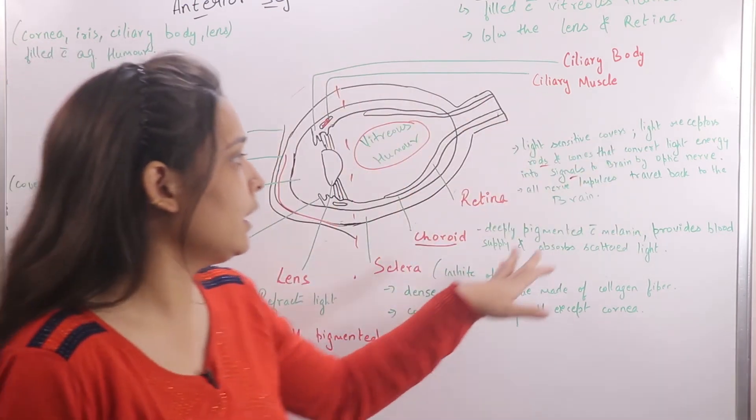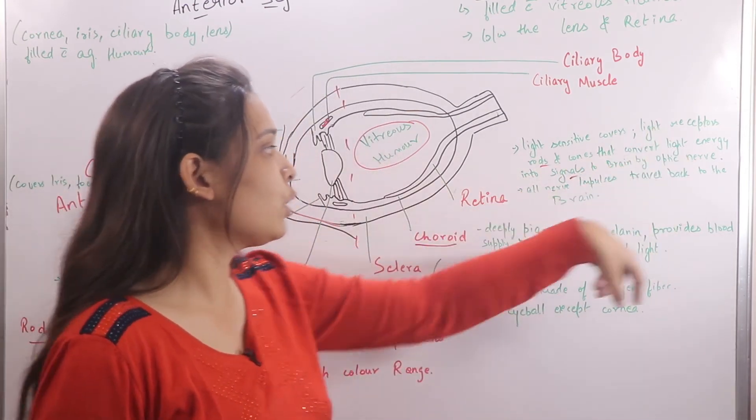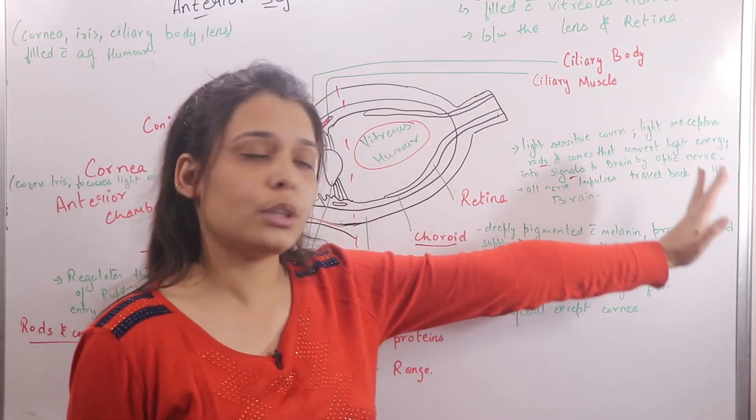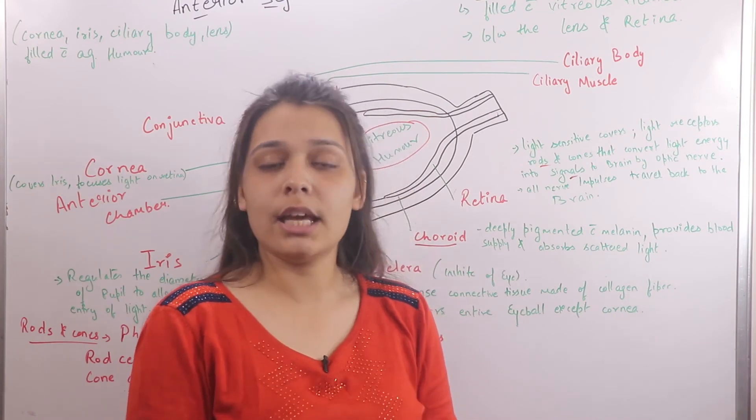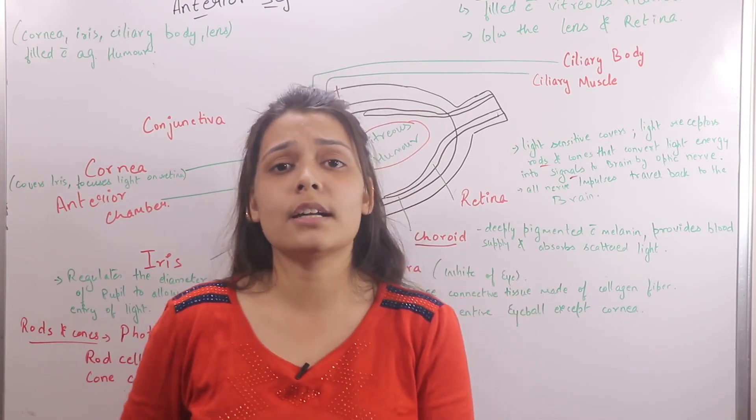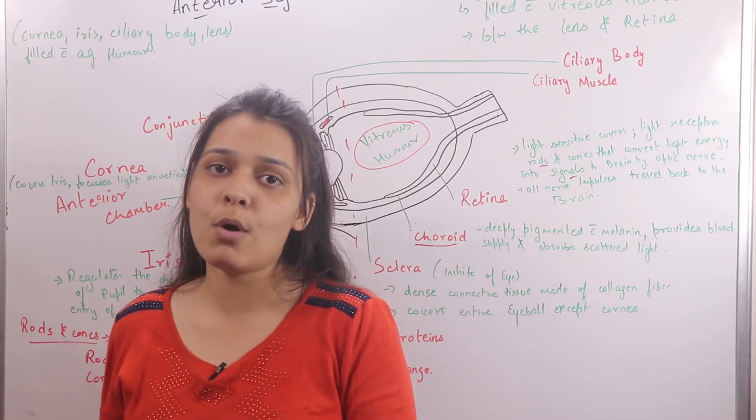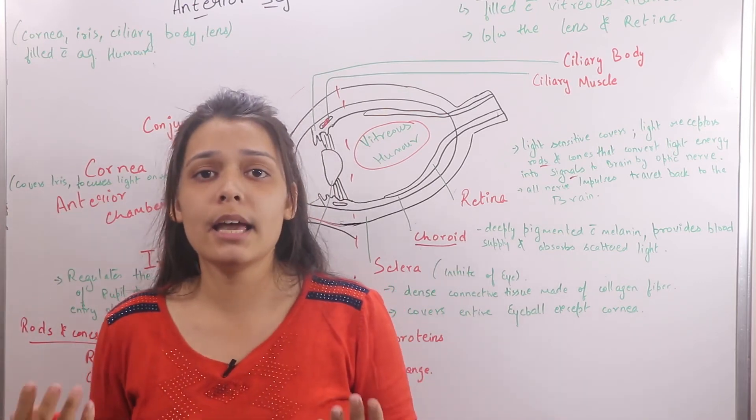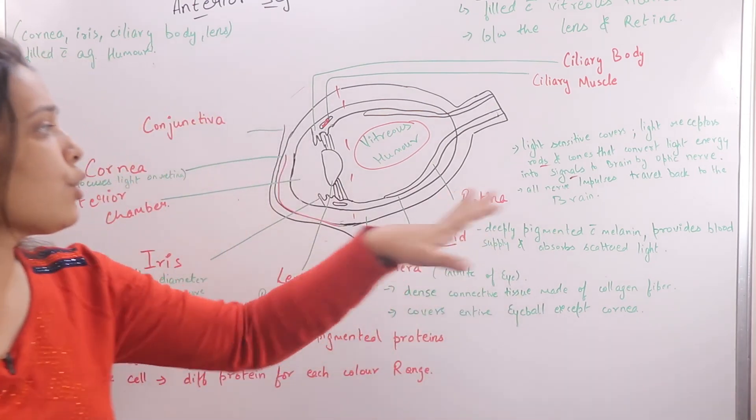Now, we have talked about rods and cones, which are light receptors in the retina. These are the two light receptors whose main function is to convert light energy into signals to the brain. The brain gives a nerve impulse so we know what we are looking at.